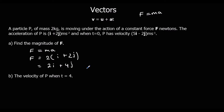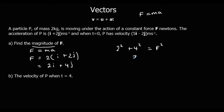Now we've found the force, but it says the magnitude. So we've got a vector in i and j format — we need to convert it to just a number, just a magnitude. We do that using Pythagoras. So 2 squared plus 4 squared equals the force squared. So we've got 4 plus 16, so 20 equals f squared, so f equals root 20 newtons.